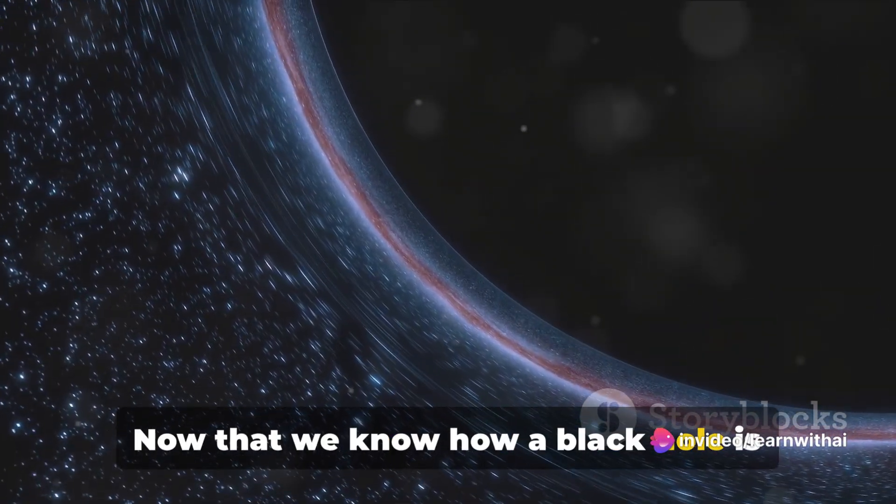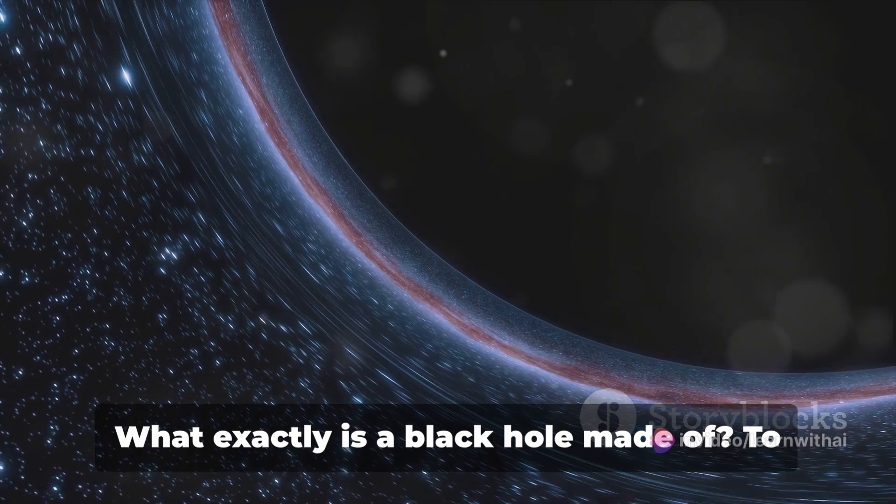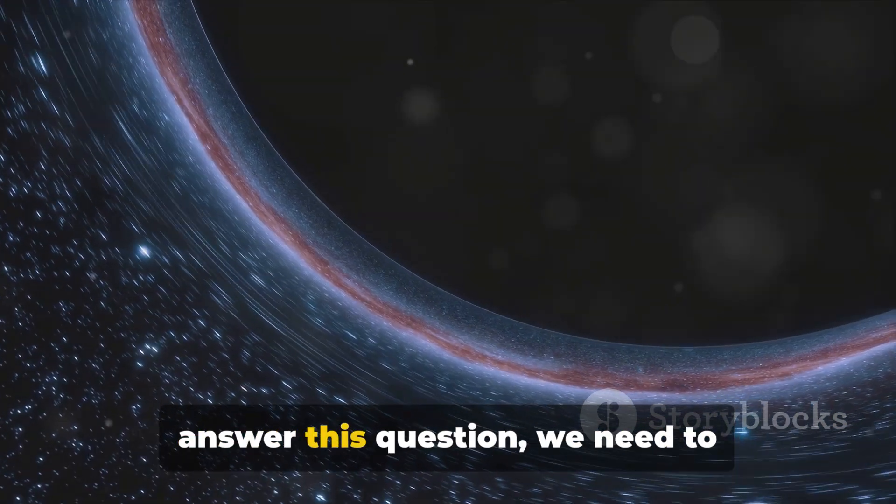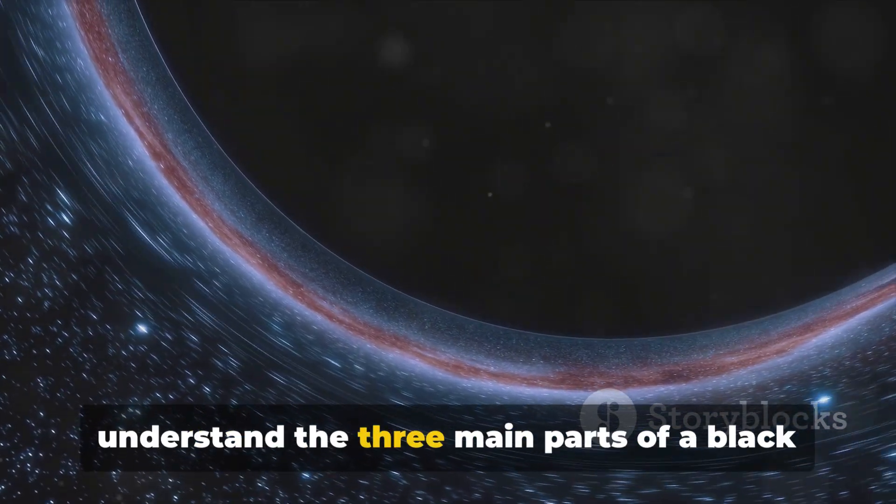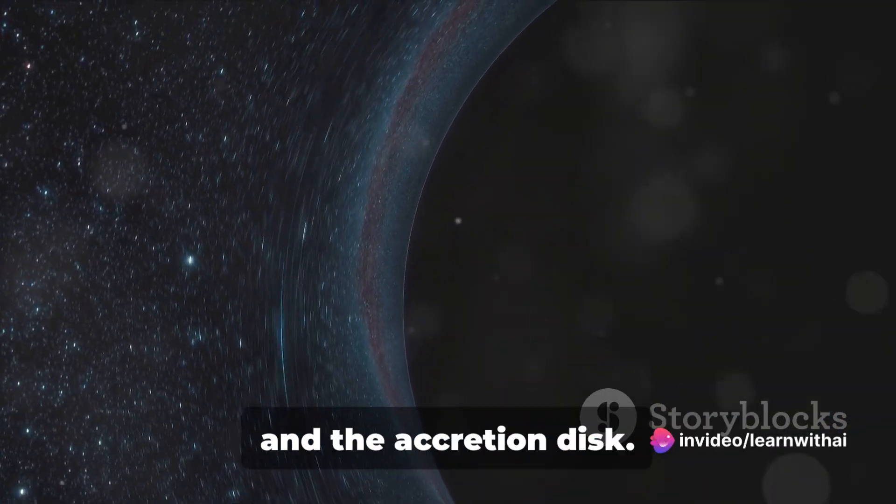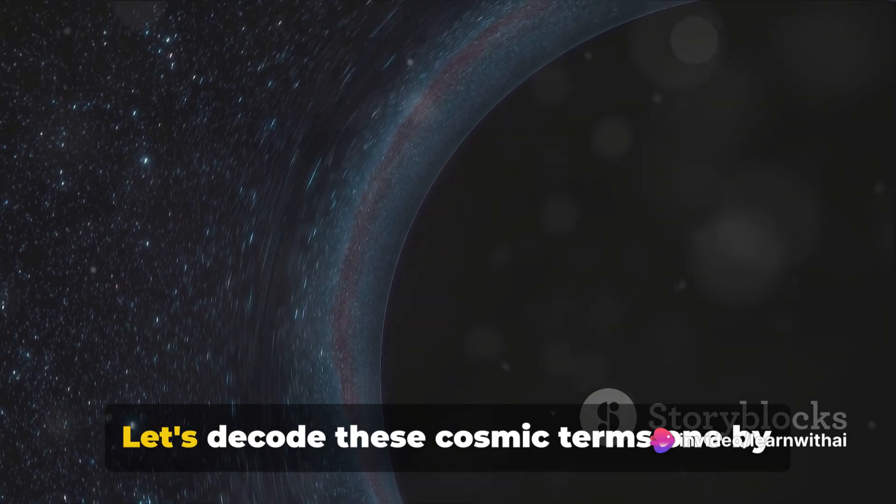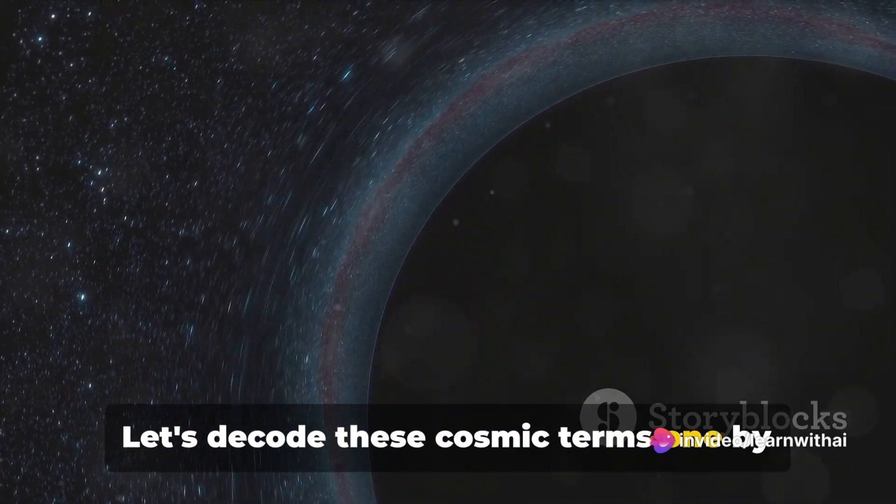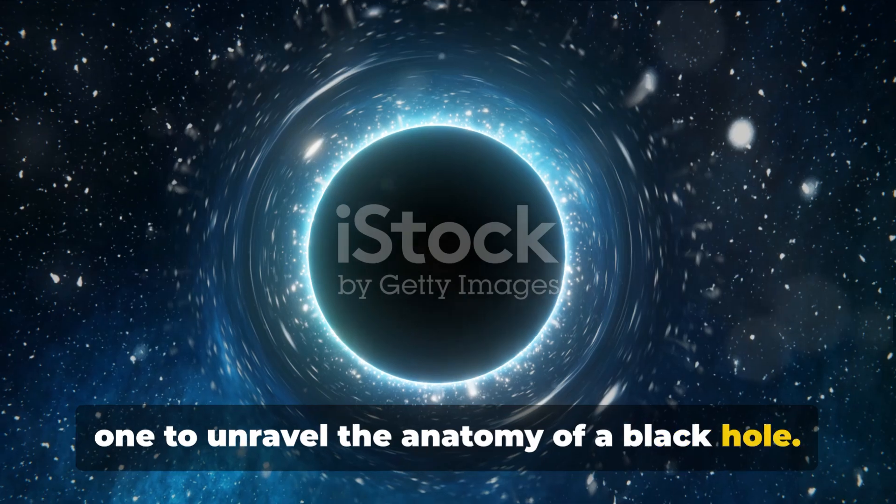Now that we know how a black hole is born, let's delve into its structure. What exactly is a black hole made of? To answer this question, we need to understand the three main parts of a black hole: the singularity, the event horizon, and the accretion disk. Let's decode these cosmic terms one by one.